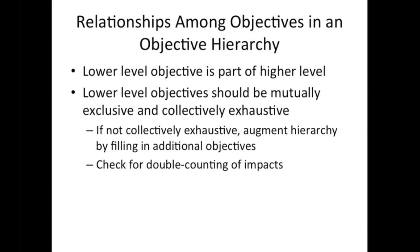What do we mean by lower-level objectives being mutually exclusive and collectively exhaustive? Basically, all the objectives taken together should completely describe the higher-level objective, and there should be no overlap between them — that is, they should be independent of each other. If your set of sub-objectives is not collectively exhaustive, you probably haven't completely specified it, so you may want to add more objectives until it is. Checking for double counting is a way to verify the mutual exclusivity criterion.